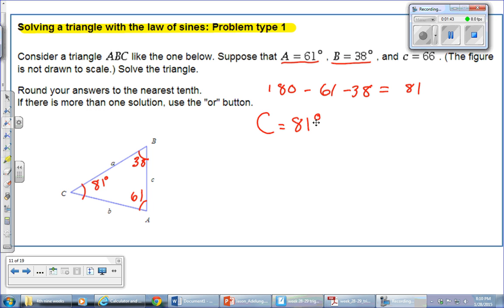That's 180 minus the two angles that they give you. So that's a piece of cake. Now, the next step, you start working in the law of sines. So let's fill in what we know as far as sides. So side-wise, all they give us is c is 66. So this c right here is 66.